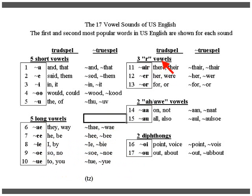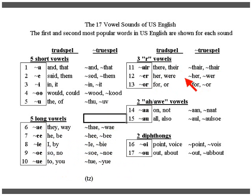Then there are the three r-influenced vowels. 'Air' — the most popular word is 'there,' and 'there' and 'they're' are both pronounced the same, so they're spelled the same. This is 'er' as in 'her' and 'were.' Notice that the word 'for,' if predominantly pronounced 'fur,' would be number one here. But if it's pronounced 'or,' you see the symbology for 'or' in TrueSpell — and that would be the most popular word. 'For' and 'or.'